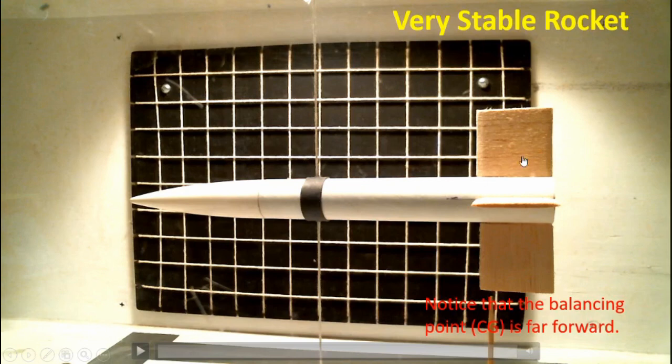Recall that the wind is moving from the right to the left in this tunnel. Right now the rocket's pointed in the wrong direction—it's pointed backwards. Let's run the experiment and see what happens.